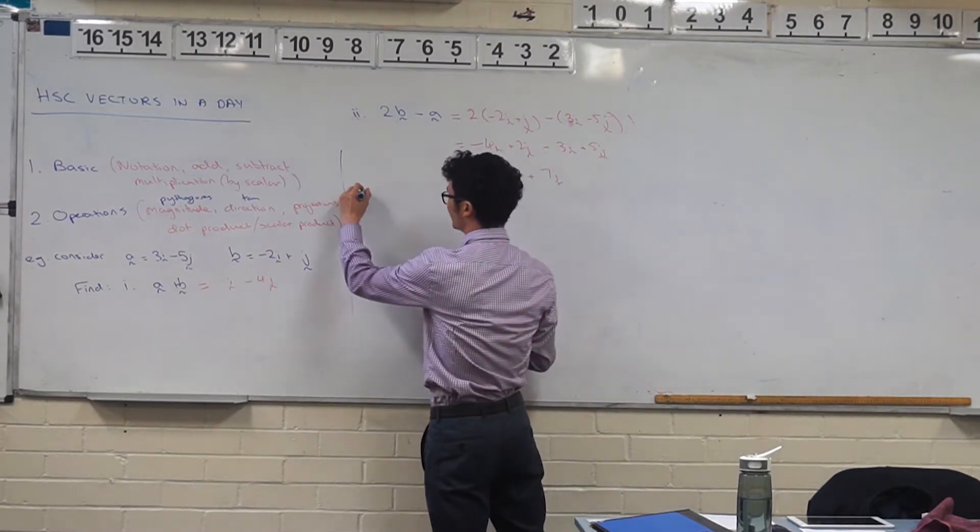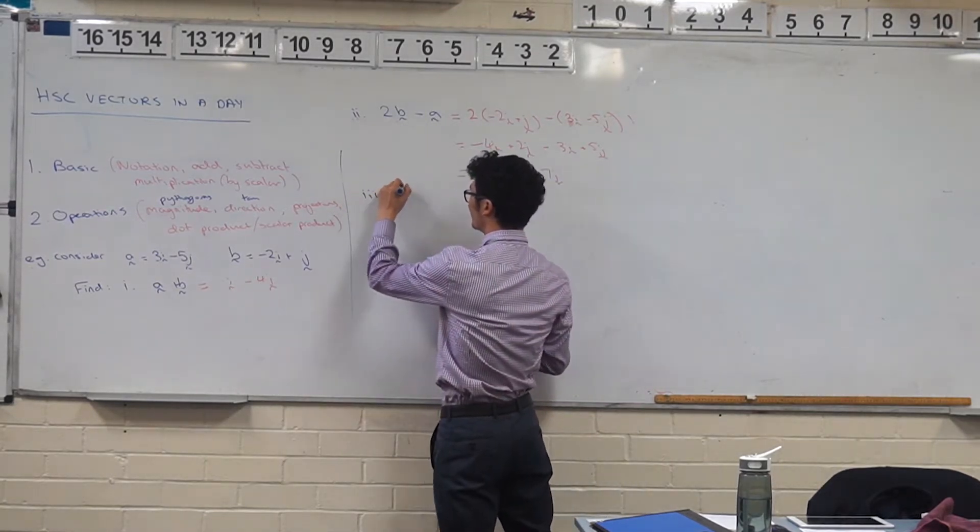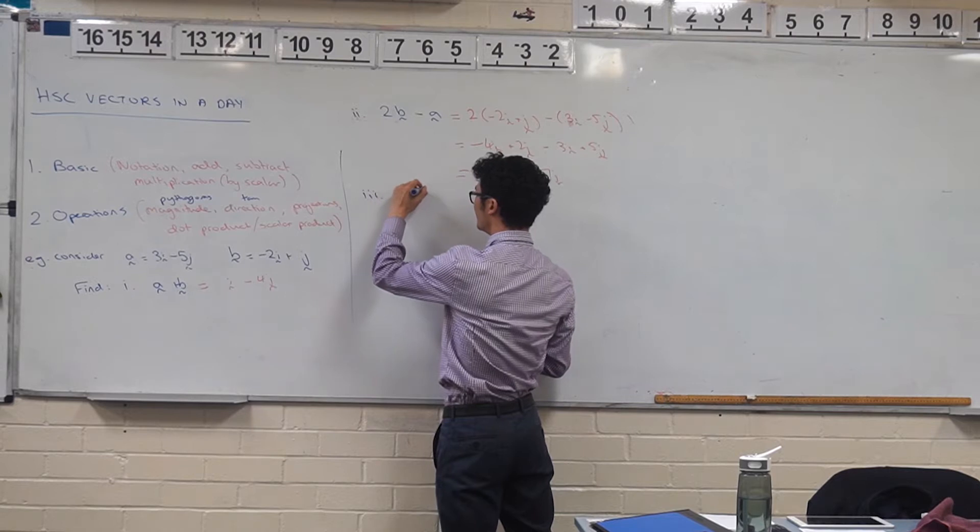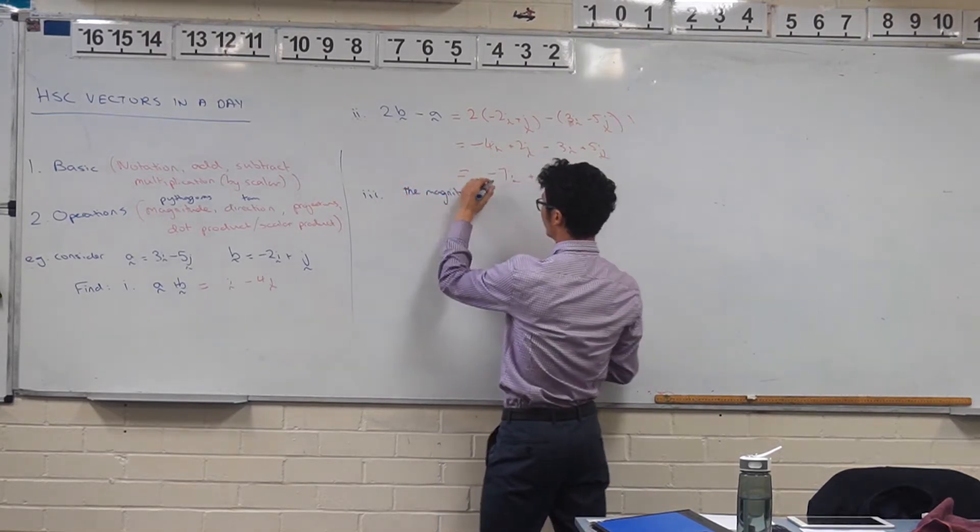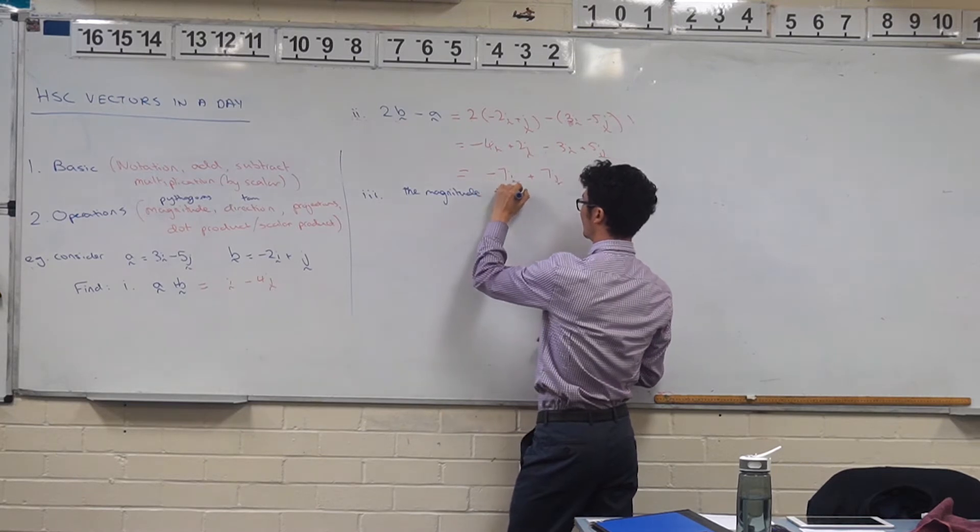Part three is going to be a little bit different. For part three we're going to find the magnitude and direction of a plus b.